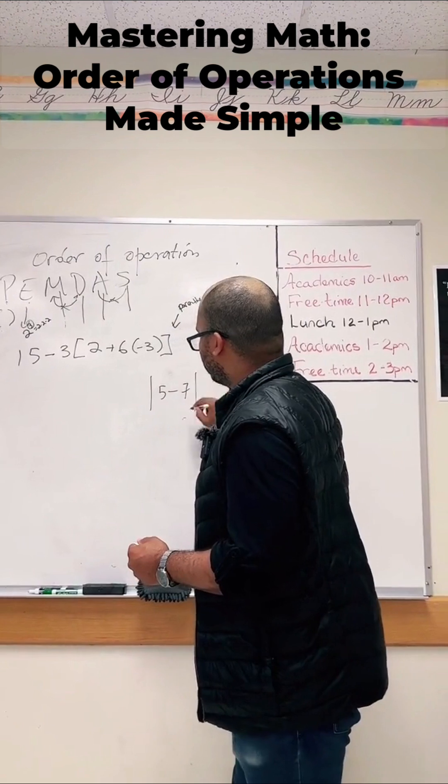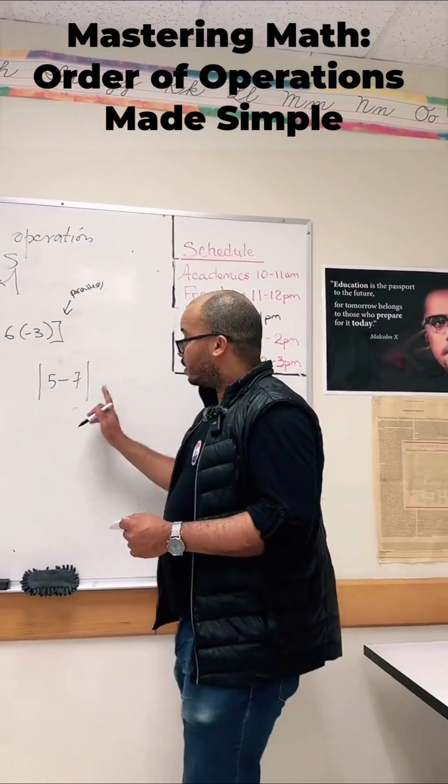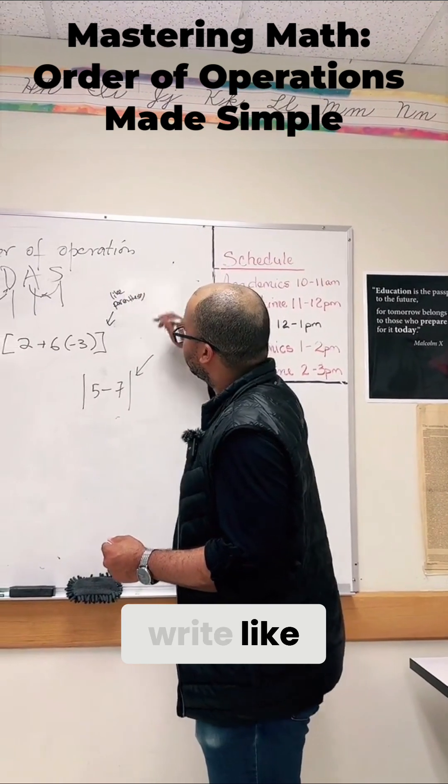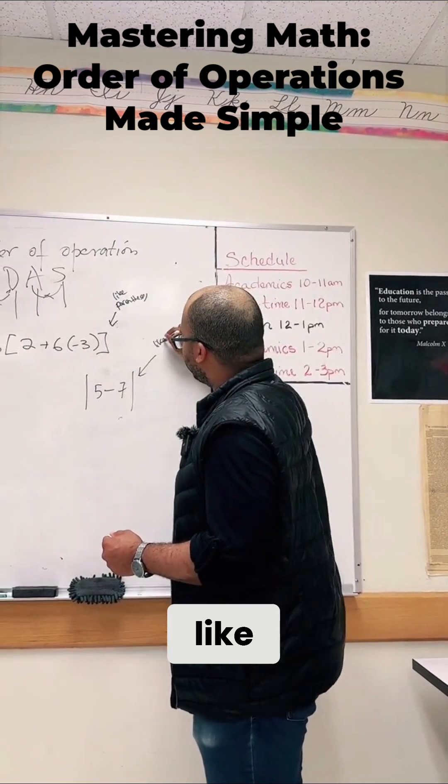Five, these are the absolute value. These you also have to treat like parentheses.